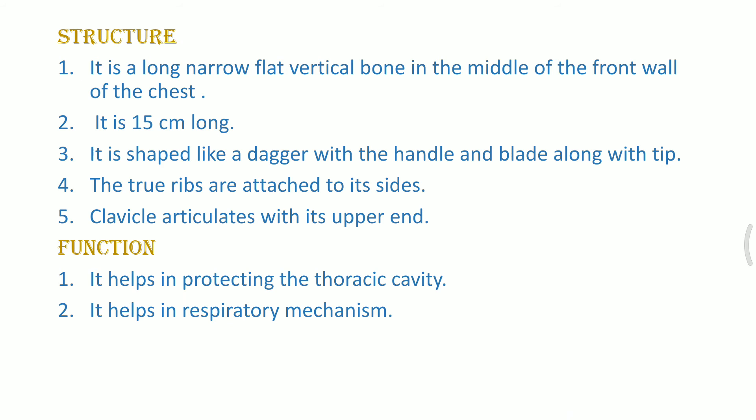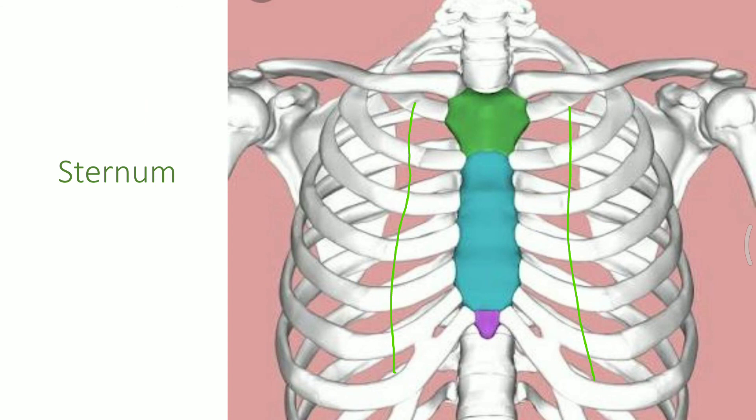The clavicle, that is the shoulder blade, is also attached to the sternum. So the sternum serves as protection for the entire thoracic cavity and also gives rise to the shoulder blade. Its functions include protecting the thoracic cavity and helping in the respiratory mechanism — the entire process of respiration is completed with the help of the sternum. It is one of the most important bones in our body.